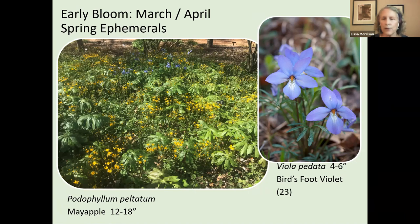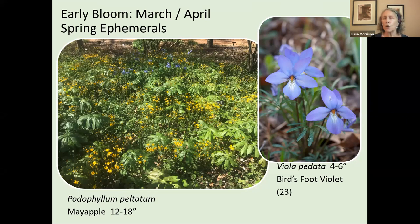This is the earliest violet to bloom — birdsfoot violet. There are many different kinds of native violets. My daughter Althea has violets so thick in her yard that she uses them like a green mulch, meaning weeds don't pop up through them. Birdsfoot violet, however, will never get that thick — it is the earliest to bloom but does not do well with too much competition.